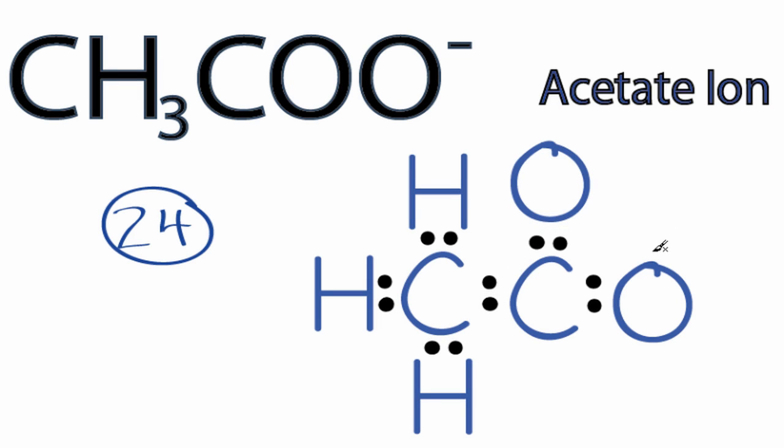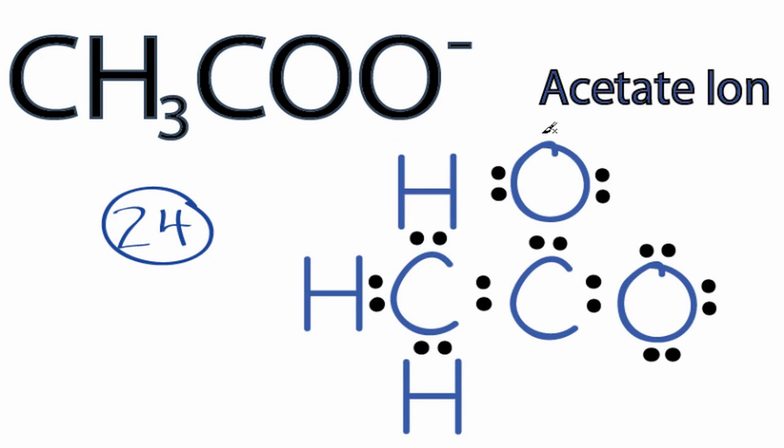Then we'll go around the oxygens to complete their octet or until we use 24 valence electrons. So we had 12, 14, and 24 valence electrons.